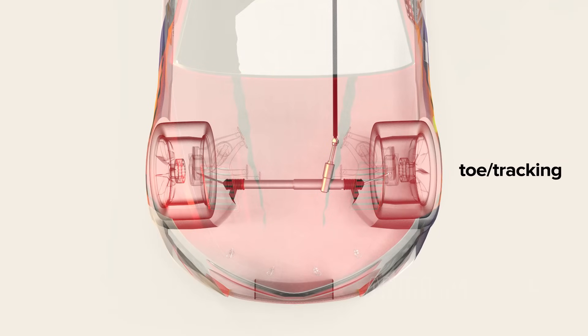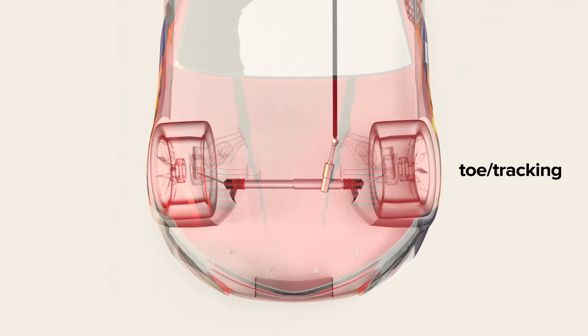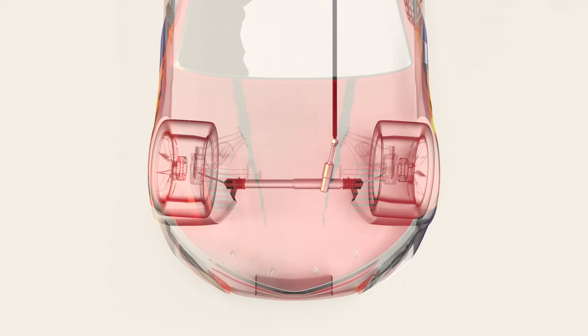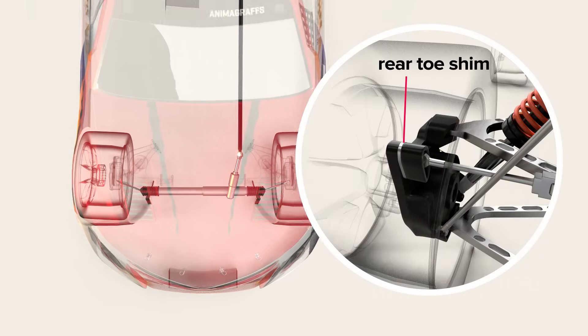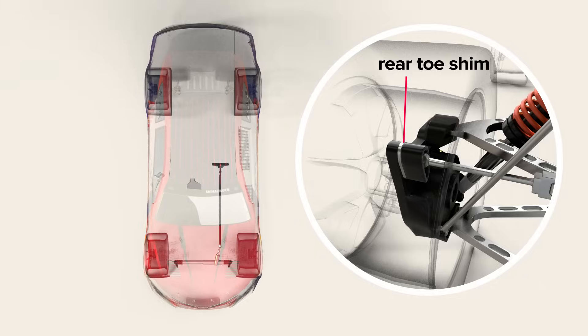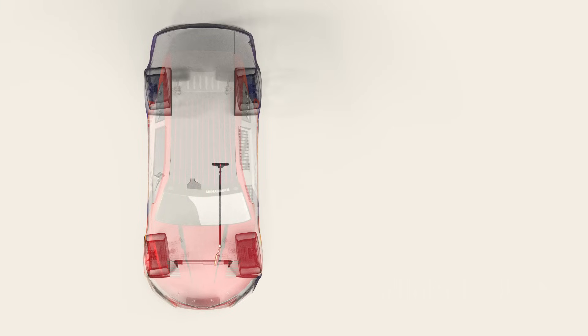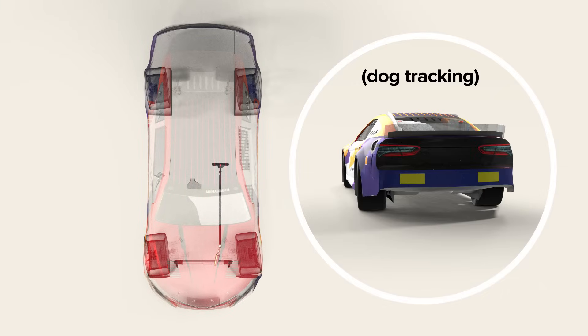Toe, also referred to as tracking, is the angle of each tire in relation to the center line of the vehicle when viewed from above. It's adjusted in the front using a toe link adjuster, and in the back using shims. Adjusting the toe in specific ways for better left hand turning is what sometimes causes the car to look like it's slightly crooked on the racetrack, even while driving in a straight line.